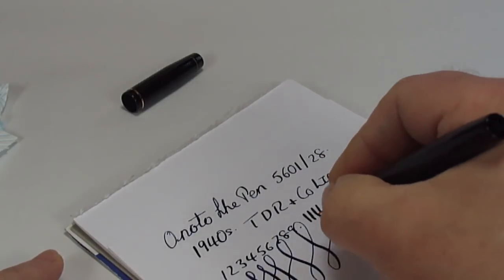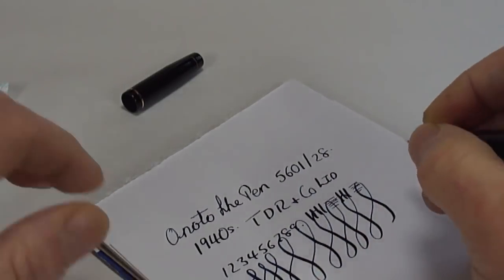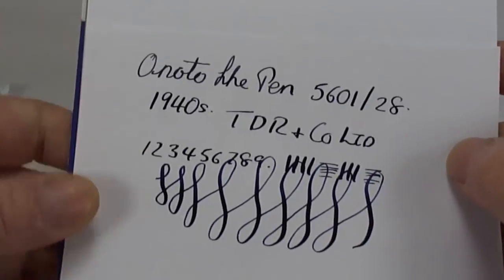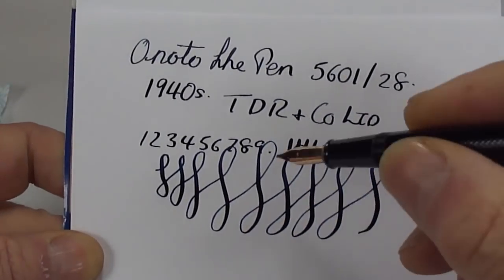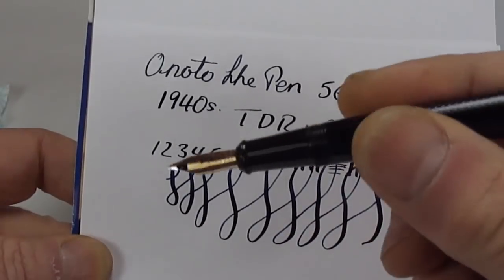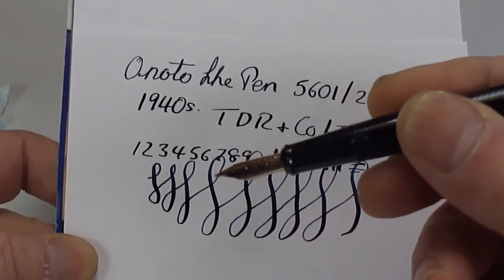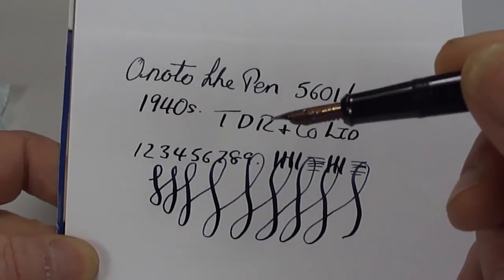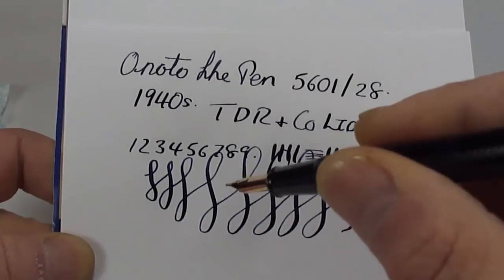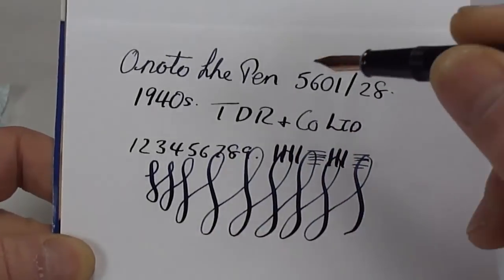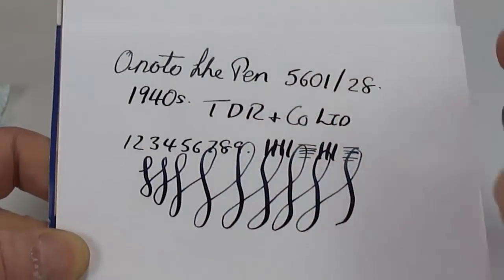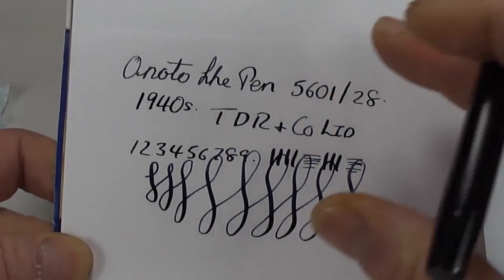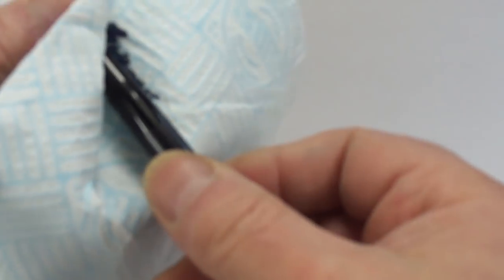Let's just dip it in once more just for the figure of eights. Look at that. Very nice. Look at that. It's got a lovely bit of flex to the nib. Which you do expect with these particular pens. The Anotto pens, the nibs are absolutely lovely. It writes nicely. And as you can see, it's got some flexibility in the nib. So it's got a lovely variation in the line.